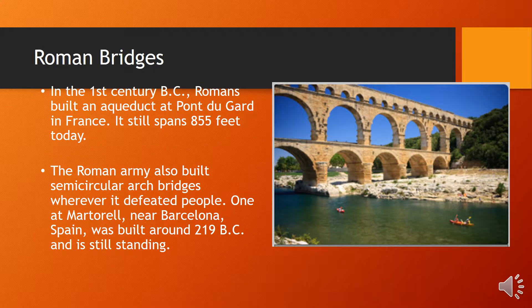Roman Bridges. In the first century BC, Romans built an aqueduct at Pont du Gard in France, which still spans 855 feet today. The Roman army also built semi-circular arch bridges whenever it defeated people. One at Martorell, near Barcelona, Spain, was built in 219 BC and is still standing.